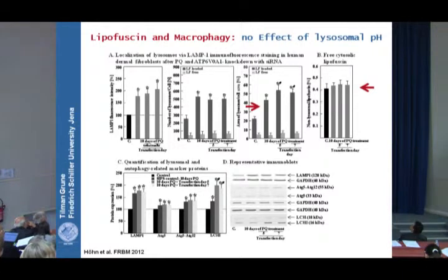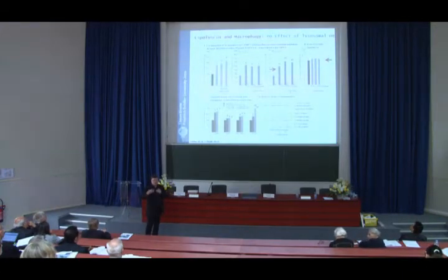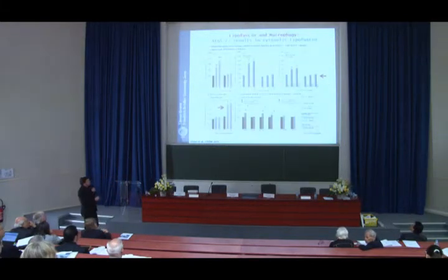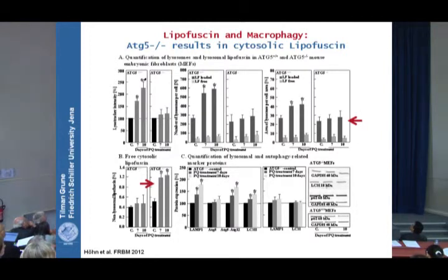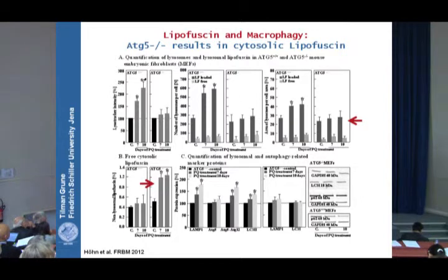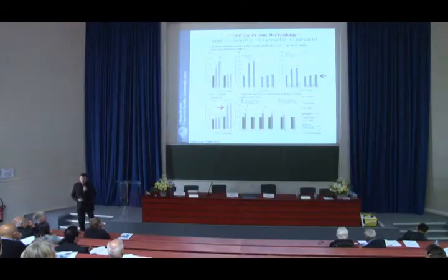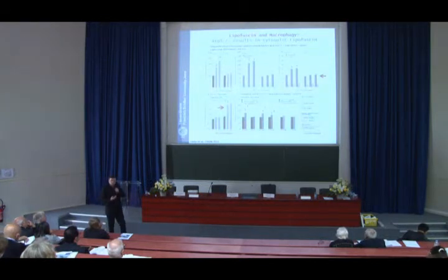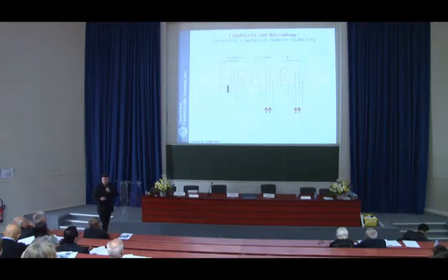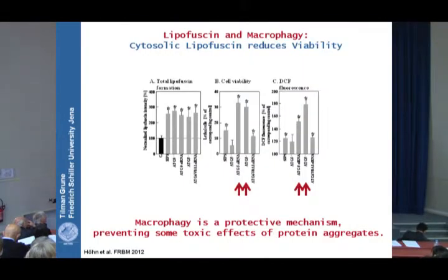We used an ATG5 knockout cell line — a mouse embryonic cell line — and also a knockdown for ATG5. In these mouse embryonic fibroblasts, stress and control conditions induced lipofuscin in the lysosomes with no free-floating lipofuscin in the cytosol. But in knockdown cells, there was no lipofuscin in the lysosomes — it was all in the cytosol. Obviously, macroautophagy is the major mechanism transporting lipofuscin and protein aggregates into the lysosomes.